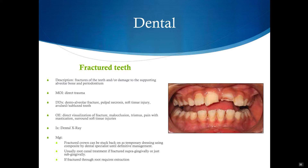Also examine the surrounding soft tissue injuries, such as intraoral lacerations. You want to have these patients referred to a dentist — they need a dental x-ray. A fractured crown can be stuck back on temporarily using dressing and composite by a dentist if they're on site. They would eventually need a root canal if the fracture involves the gingival or just subgingival area. If the fracture is through the root, generally the tooth needs to be extracted.